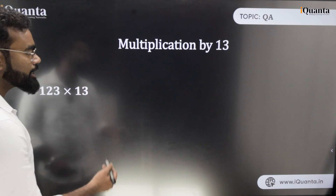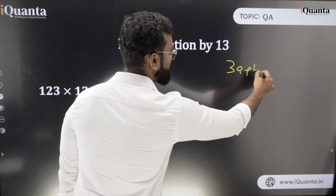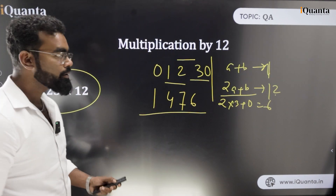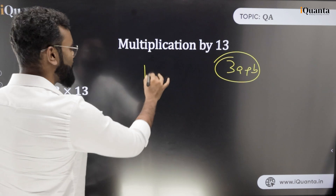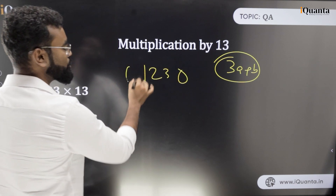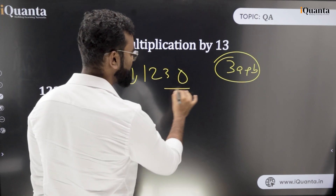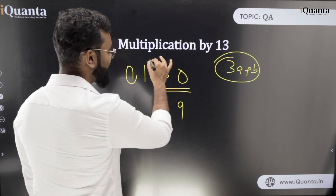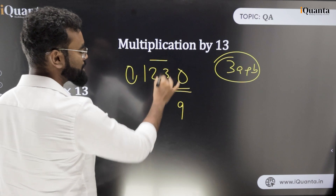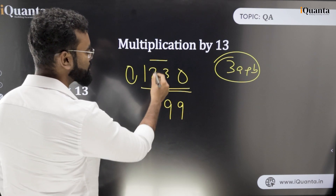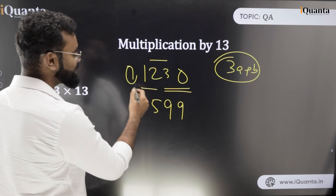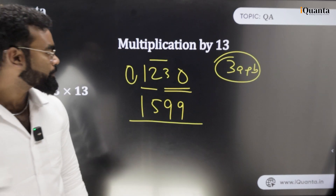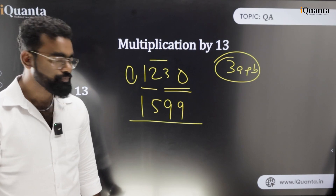Next we will discuss 13. For 13 we do 3a plus b — just as 12 was 2a plus b, 13 is 3a plus b. Using 123 again, add 0 on each side. So: 3 into 3 plus 0 is 9; next 3 into 2 plus 3 is 9; next 3 into 1 plus 2 is 5; next 3 into 0 plus 1 is 1. Your answer is 1599.